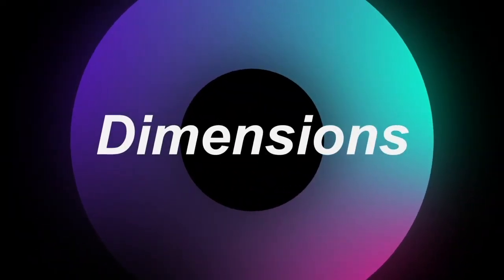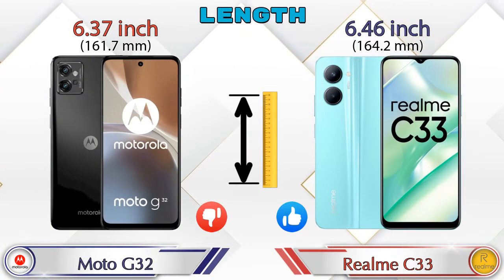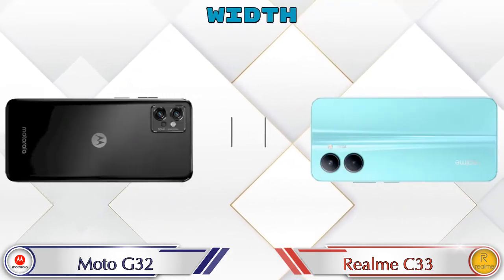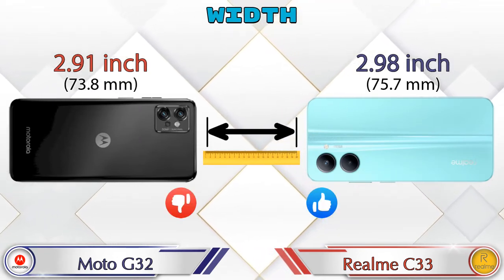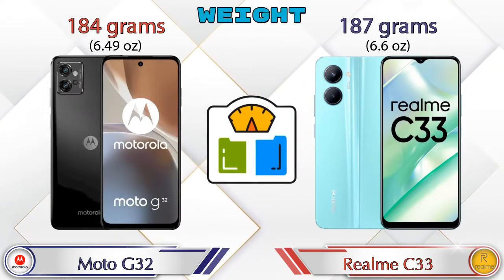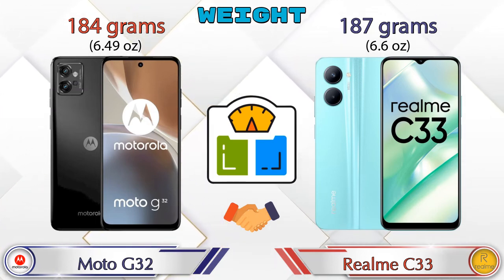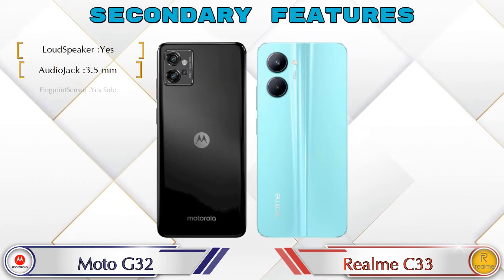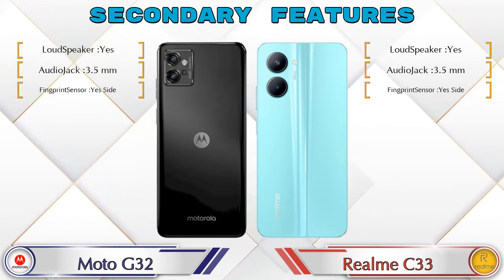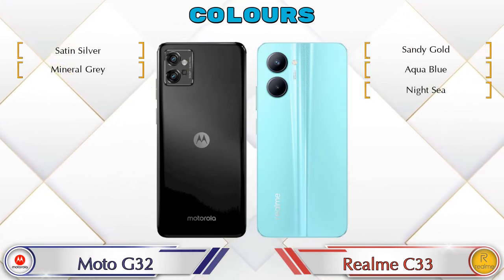Now let's check the dimensions. The length of the G32 is 6.37 inches and the Realme C33 is 6.46 inches. Width: the G32 is 2.91 inches and the Realme C33 is 2.98 inches. Weight: the G32 is 184 grams and the Realme C33 is 187 grams — almost similar. Color options: the G32 has two colors and the Realme C33 has three color options.